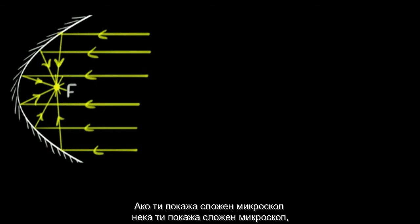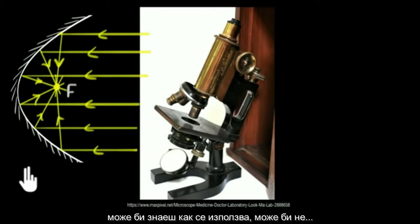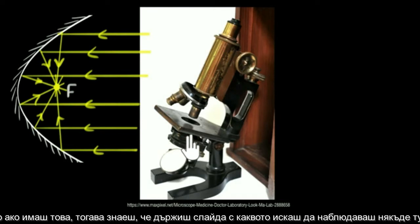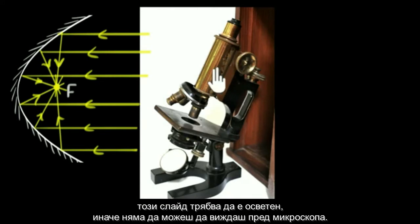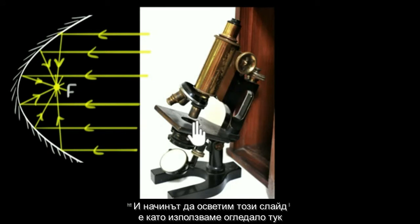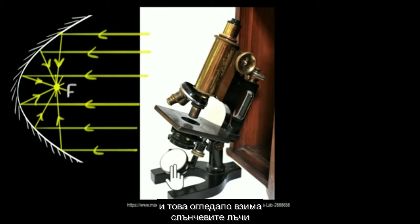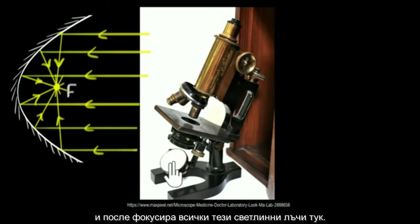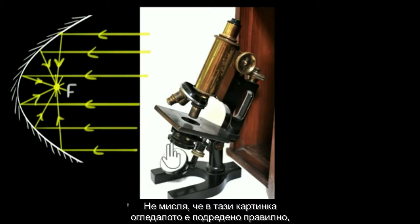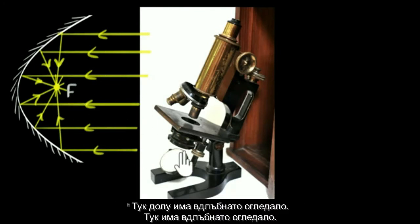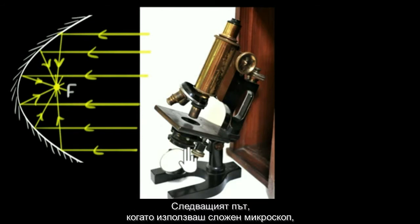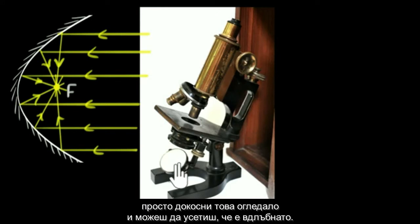One of the applications we can see is in microscopes. In a compound microscope, you keep your slide — whatever you want to observe — and you need that slide to be lit up, otherwise you can't see through the microscope. The way we light that slide up is by using a mirror, which takes in sunlight and focuses it right at the slide. So there's a concave mirror down there. Next time you use a compound microscope, just touch that mirror and you can feel the concave part of it.